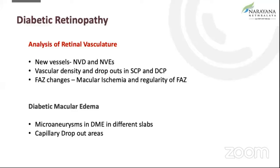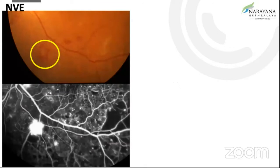Coming specifically to diabetic retinopathy, OCTA helps us in analysis of retinal vasculature — whether it is new blood vessels, vascular density, or dropout in both the SCP and the DCP. The FAZ can also be seen very early, and we are able to pick out macular ischemia, with the irregularity of the FAZ very well seen. With respect to macular edema, we are able to see microaneurysms and capillary dropout areas very well.